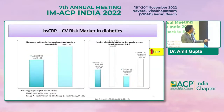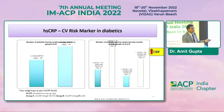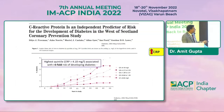High-sensitivity CRP is considered a key severity marker in diabetes. Even in post-COVID patients, elevated CRP levels are considered markers of inflammation and increase the risk of cardiovascular diseases.